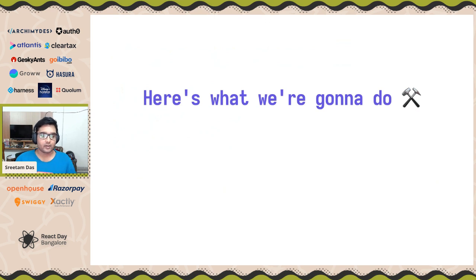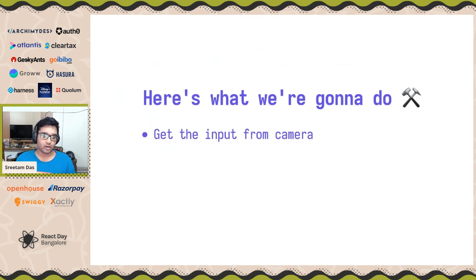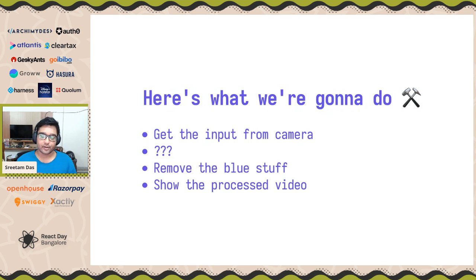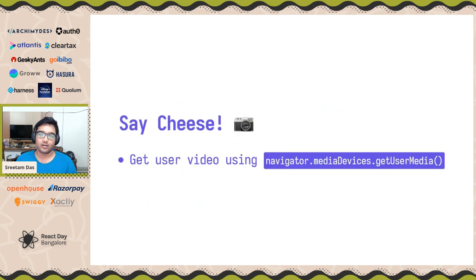So here is basically what we're going to be doing. We get the input from the user's camera — we figured out how to do that. We're going to remove the blue stuff, and then we're going to show this processed video back. And that's about it.